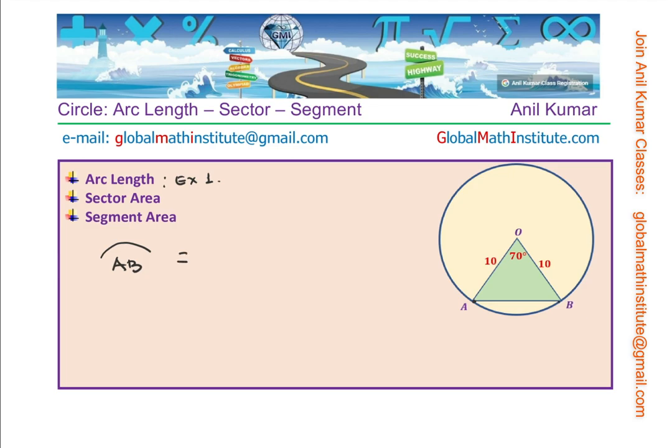Length of the arc AB will be the angle which is 70 degrees divided by 360 degrees, which is full circle, times 2πr. The radius is given to us as 10, so we can write this as 70 over 360 degrees times 2π times 10.